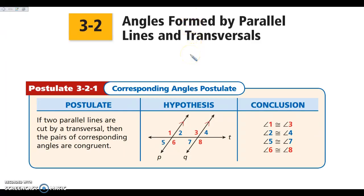Hello everybody. Today we are looking at 3-2, which is angles formed by parallel lines and transversals. In 3-1 we talked about when we had two lines cut by a transversal, we looked at our four angle pairs: corresponding angles, same-side interior angles, alternate interior angles, and alternate exterior angles. Today we're going to look at what happens when those two lines are actually parallel — what do we know about those angle measures?